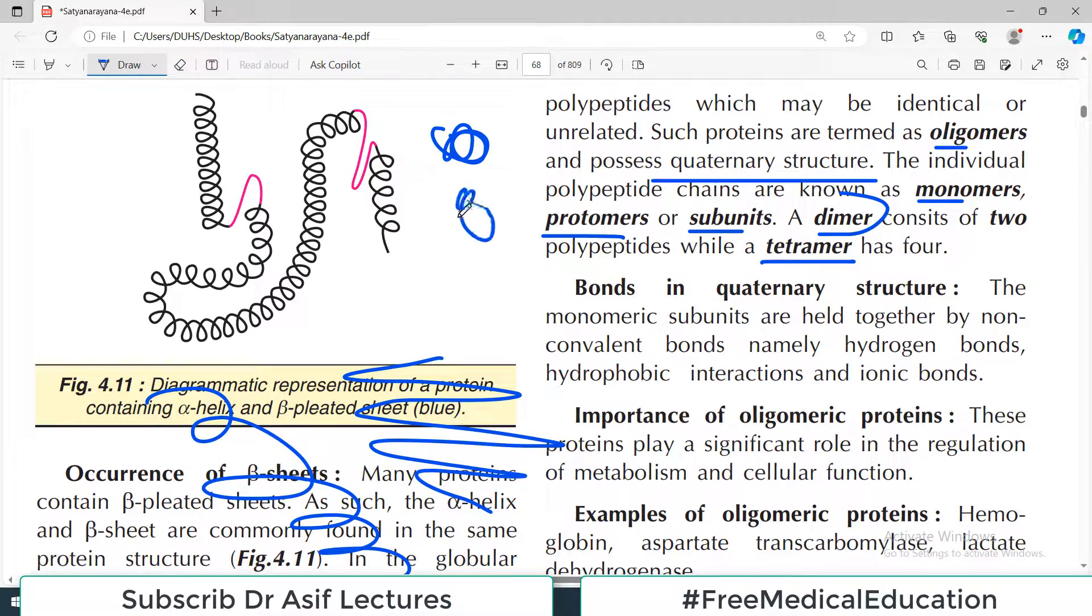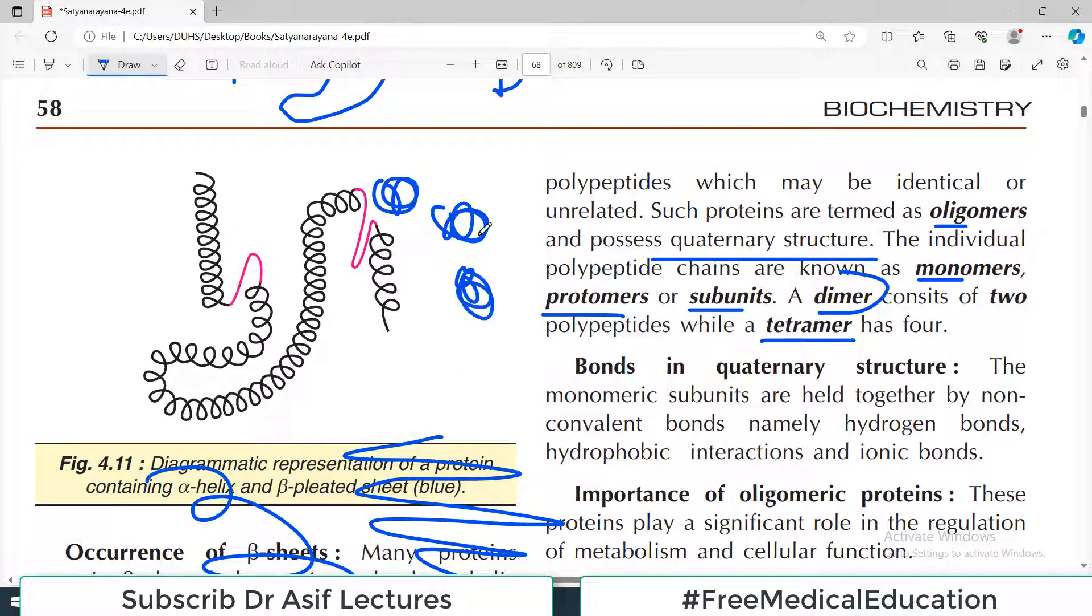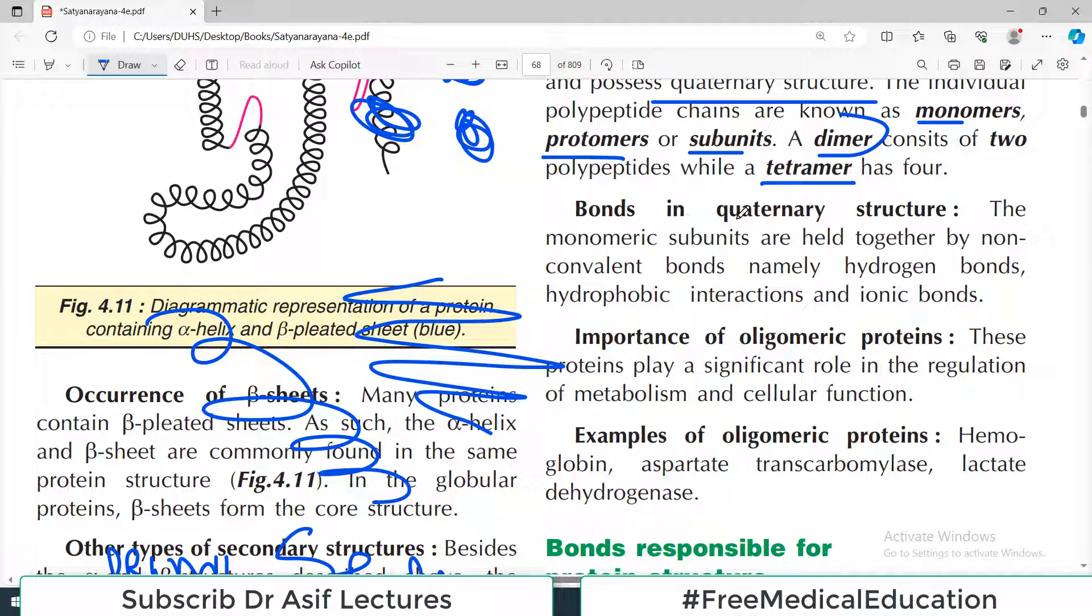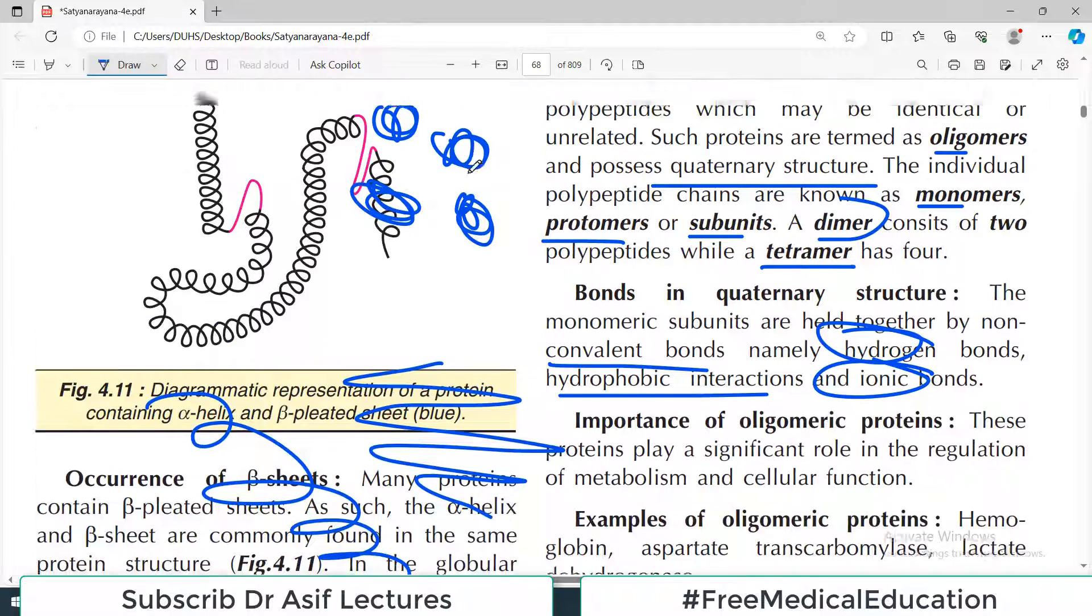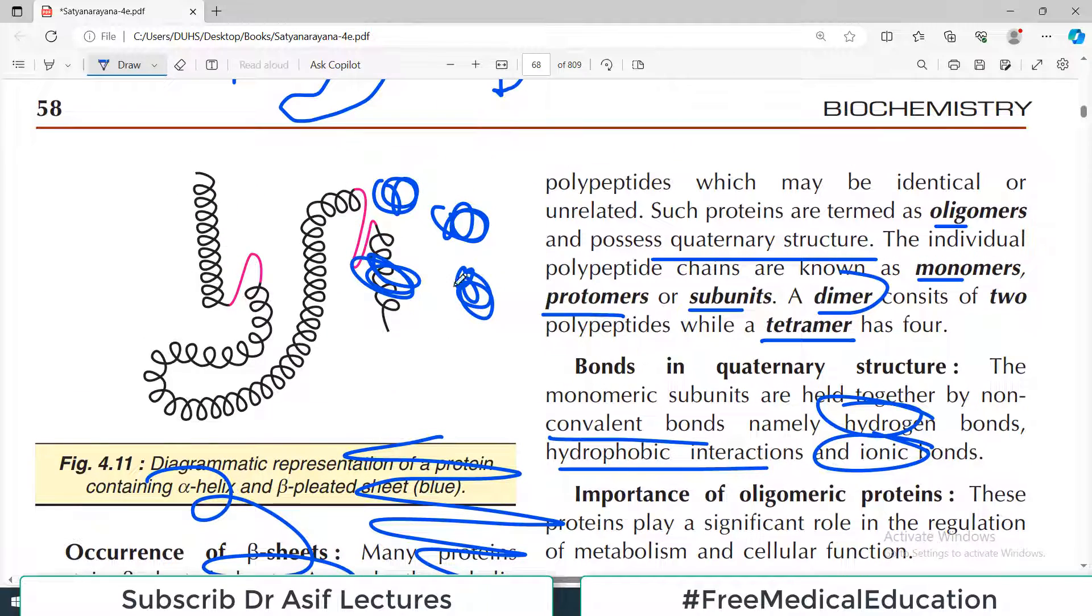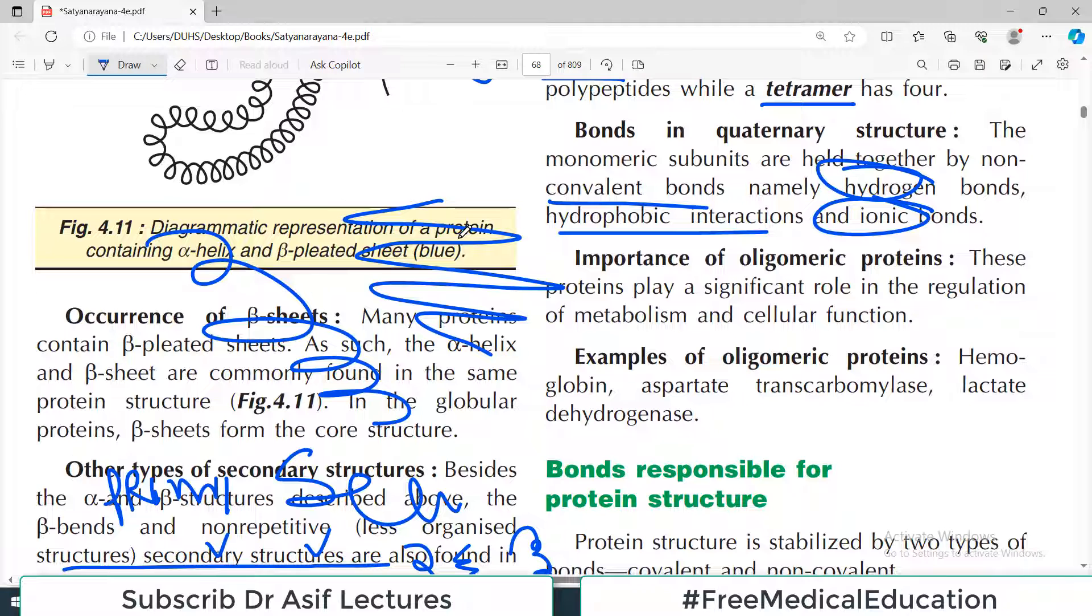Now obviously when there are different subunits of a protein, and each has its own primary, secondary, tertiary structure, if there are four monomers in a protein, they must be attached with some force. The monomeric subunits are held together by non-covalent bonds, namely hydrogen bonds, hydrophobic interactions, and ionic bonds. They have some attraction. They are all weak, but overall they make good strength.